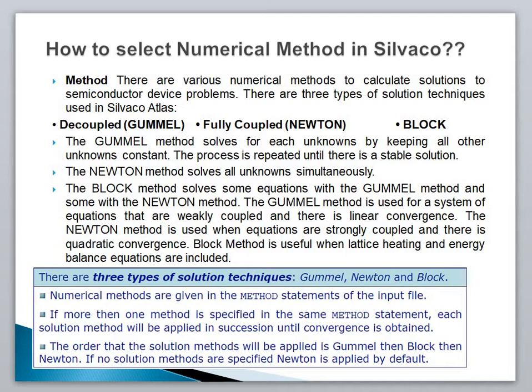The Gumel method solves for each unknown by keeping all other unknowns constant at a time. It will take one unknown and assume the other unknowns to be constant values. This process is repeated until a stable solution is found. It will continue until you find a stable solution to your problem.